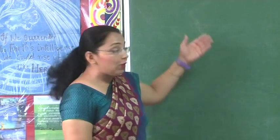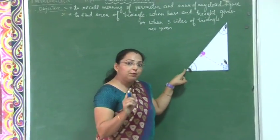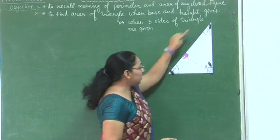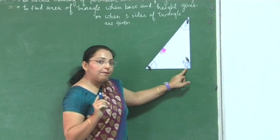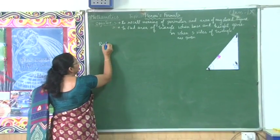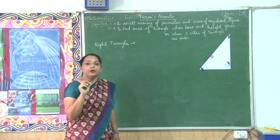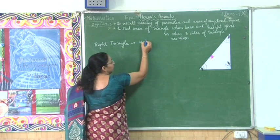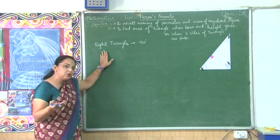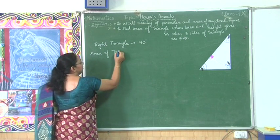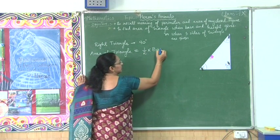Today we are going to study more about the area of a triangle. A triangle is a polygon made up of three sides, it has three vertices, and three angles are formed. You all are aware about the right triangle. A right triangle is that special triangle in which one of the angles is 90 degrees. When talking about the area of a right triangle, in junior classes we learned that the area of a triangle can be calculated using the formula: half into base into height.